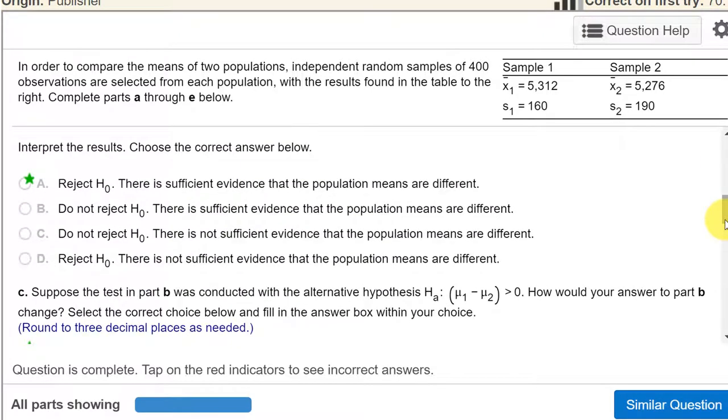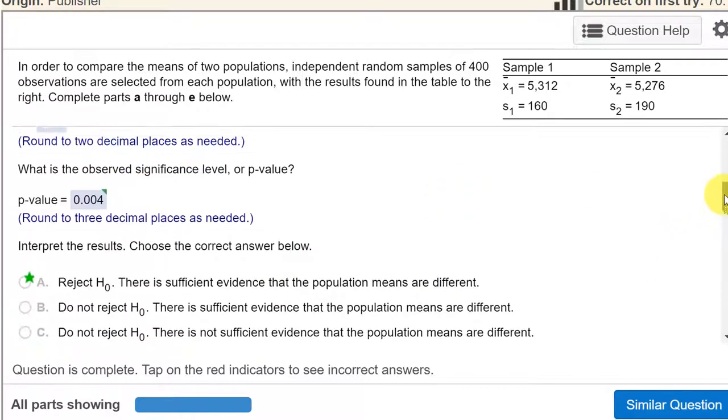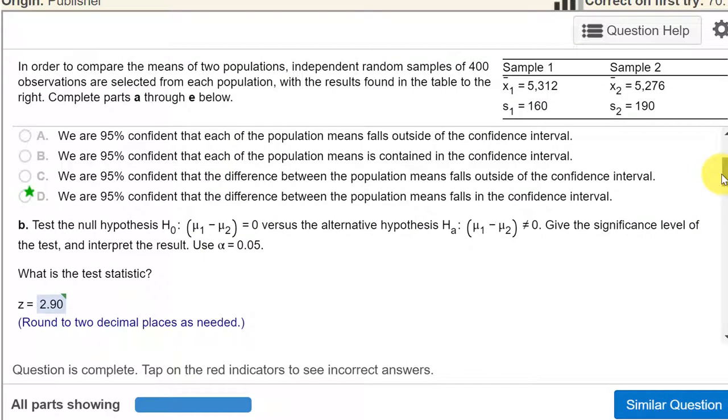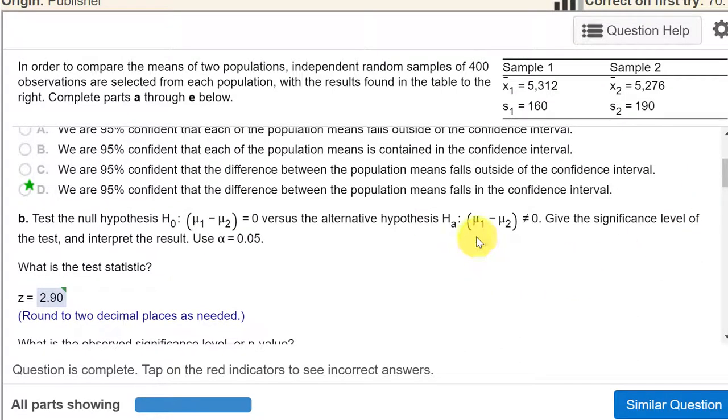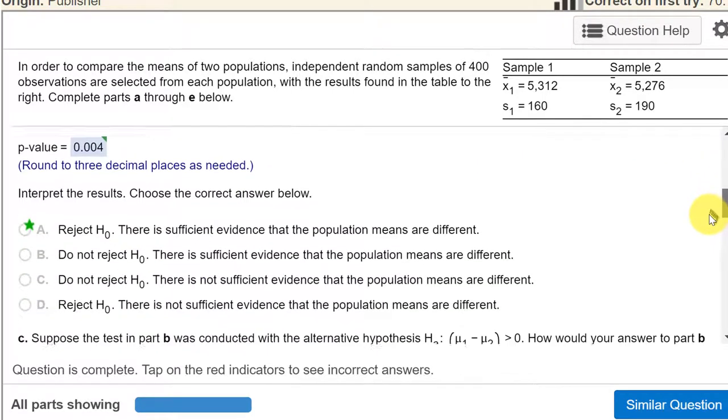We interpret the results because the p-value, .003, is less than alpha of .05. That means we reject the null. And that tells us that there is sufficient evidence that the population means are different. Remember, if we reject the null, we accept the alternative. And here the alternative is that the means are different, that the difference is not equal to zero. So that's how we answer that problem.